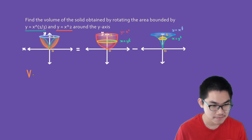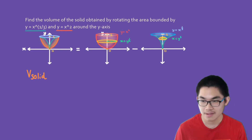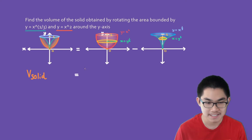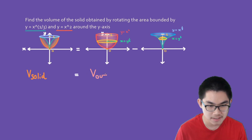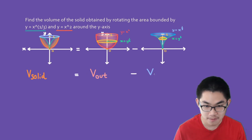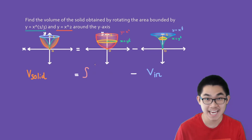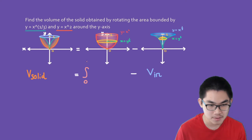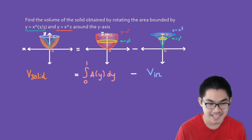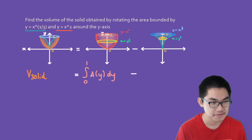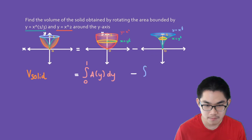The volume of our solid equals the volume of the outside function minus the volume of the inner function. The volume formula is the integral from 0 to 1 of A(y) dy, where A(y) is the area of the circular cross-section. The volume of the inner function is similarly the integral from 0 to 1 of A(y) dy.